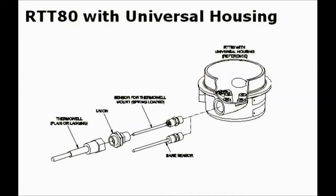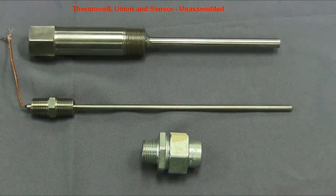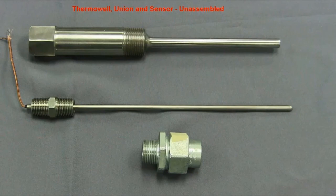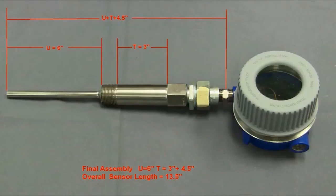Finally, by reassembling the thermowell mounted transmitter, you can clearly see how the components go together with the thermowell and sensor fitting correctly. Looking at the completely assembled transmitter, we see that the sensor length is equal to the thermowell U plus T length and how the factory determined the 13.5 inch overall length.